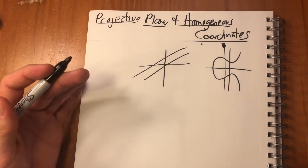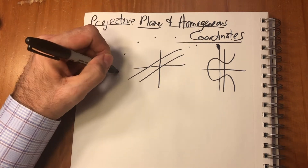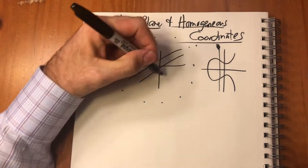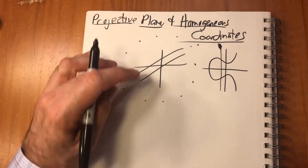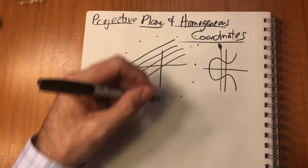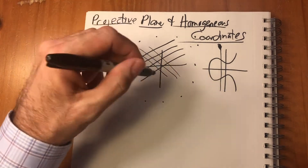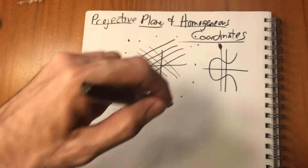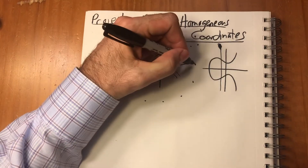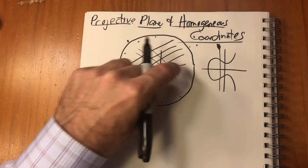Originally, when they first started thinking about this, they thought of it as a whole family of points around the Cartesian plane out at infinity, so that every family of parallel lines met at one point. Lines parallel one way meet at one point at infinity; lines going another way meet at some other point at infinity. There are an infinite number of points at infinity, one for each family of parallel lines, forming a line at infinity all the way around the outside.